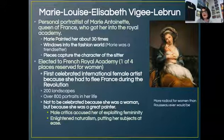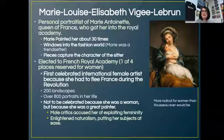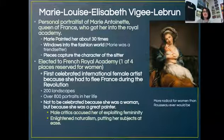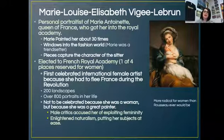Vigée Le Brun became essentially the court painter of Marie Antoinette, painting her many times — much like Velázquez. Her style has a slightly hazy, Rococo softness in terms of appearance, but the ideas behind her work were very Enlightened. She would paint her subjects — especially women — wearing clothes from ancient Greece and Rome, giving her work that neoclassical element. And being a woman painter at all was itself an Enlightened act.